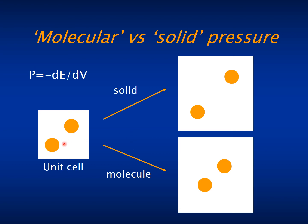This refers to two possible definitions of pressure, that is of the derivative of the energy with respect to volume. If you increase the volume of the unit cell, you could do two different things with the atoms. In a solid, what you would expect is that the atoms or the interatomic distances increase with the volume of the unit cell, so that the relative shape remains the same.